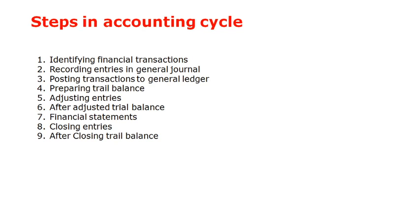Now, discussing the 9 steps: the first step is identifying financial transactions, the second step is recording entries in the journal, the third step is posting from the journal to the general ledger, the fourth step is preparing the trial balance, the fifth step is making adjusting entries, the sixth step is preparing the adjusted trial balance, the seventh step is preparing financial statements, the eighth step is making closing entries, and the ninth step is the post-closing trial balance.